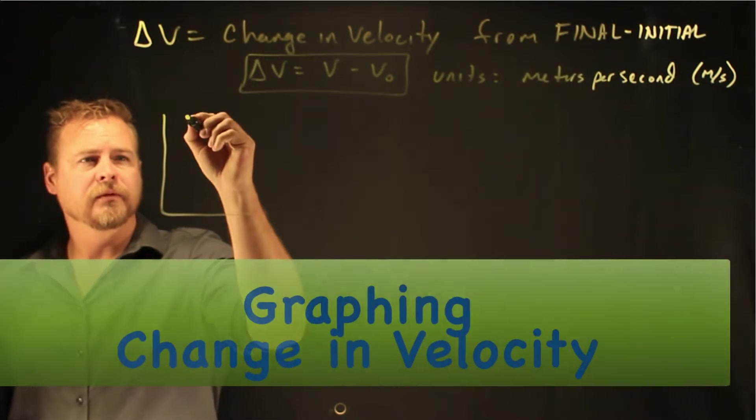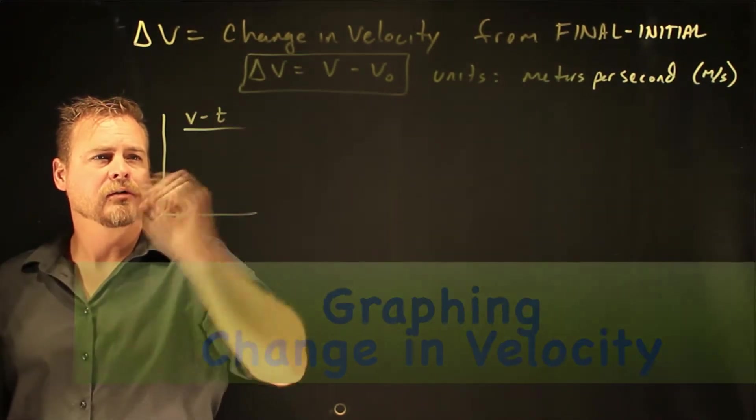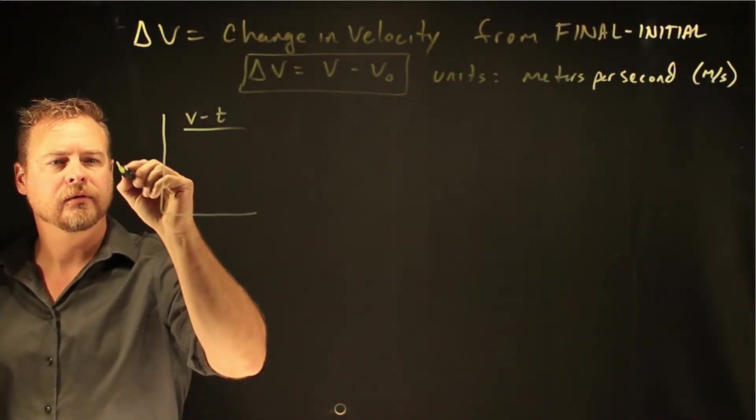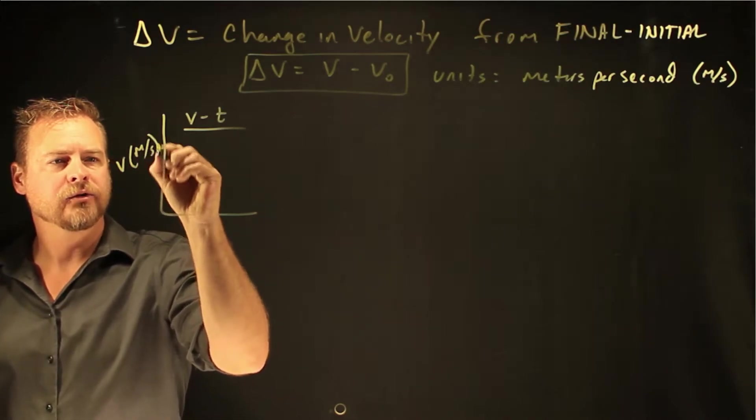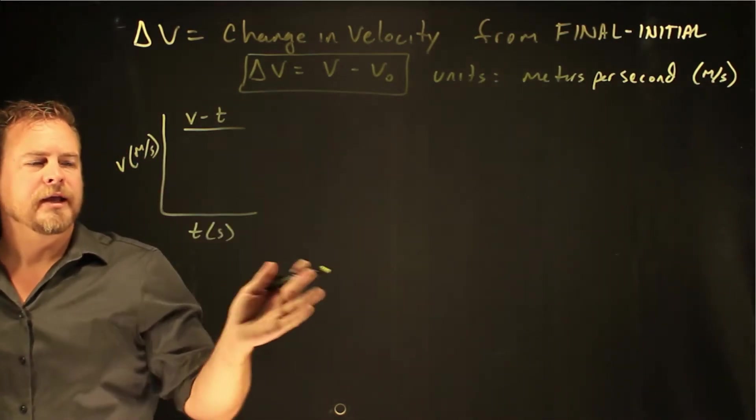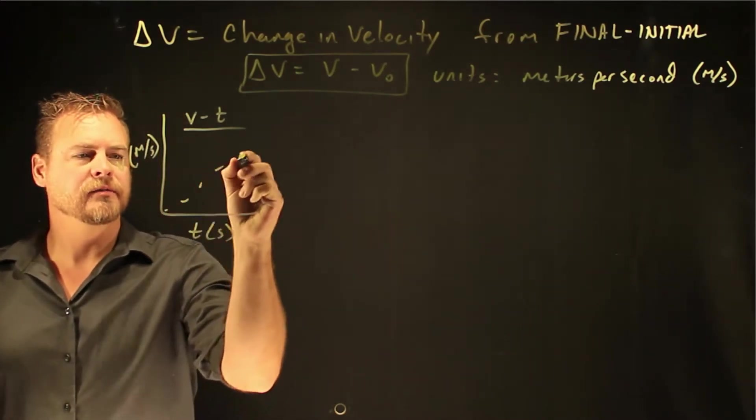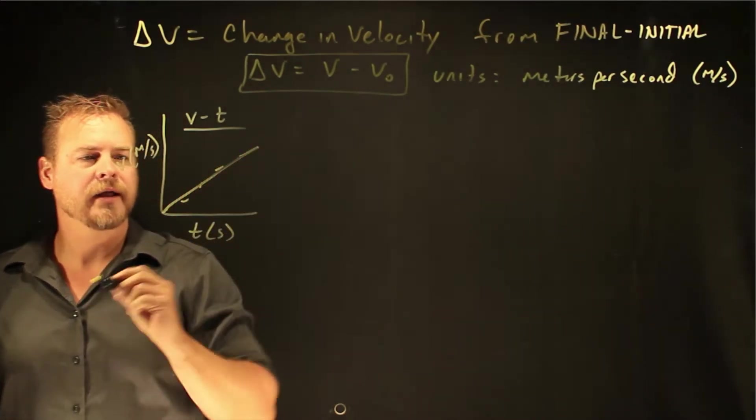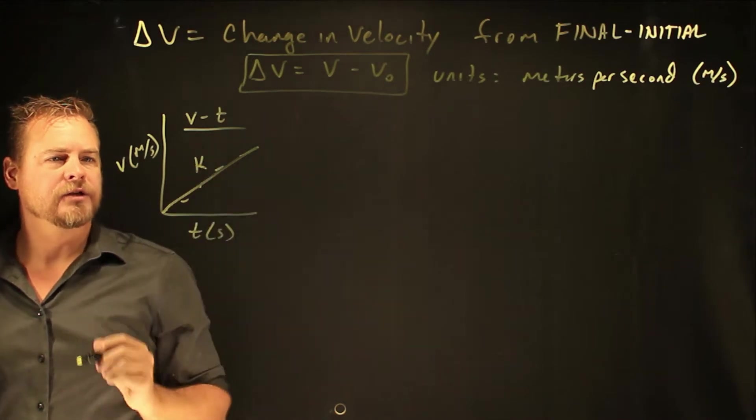Graphically, let's look at a vt graph, so a velocity time graph, where velocity is in meters per second and time is in seconds. You did an experiment and you collected some data, and so you draw a line and you realize that k is your slope.